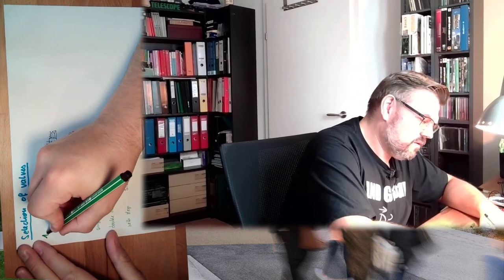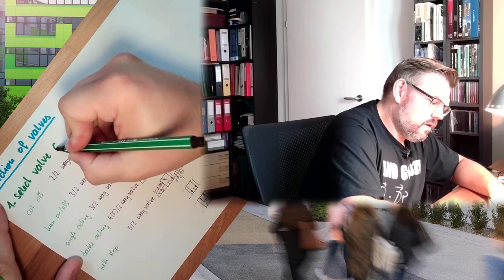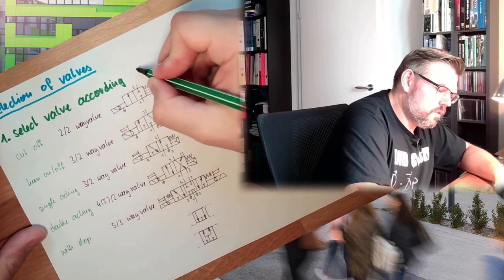Hello and welcome to a new video about electropneumatics or electrohydraulics, it doesn't really matter because the basic principle is the same. Today we want to discuss how we are going to select a proper valve for our application. The most important thing a valve can do is work according to the desired function. So the first thing I have to do is select the type of valve according to the function. This is really the first and basic step. Everything else is secondary. So first select valve according to function.